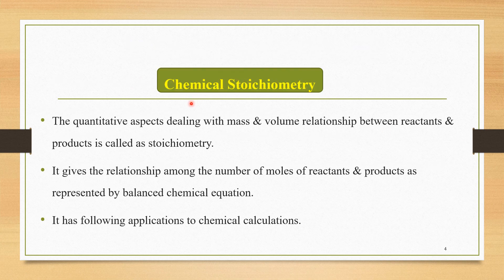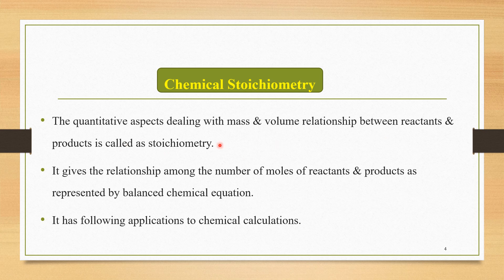The next important concept is chemical stoichiometry. The quantitative aspects dealing with mass and volume relationships between reactants and products is called stoichiometry. It gives the relationship among the number of moles of reactants and products as represented by a balanced chemical equation.